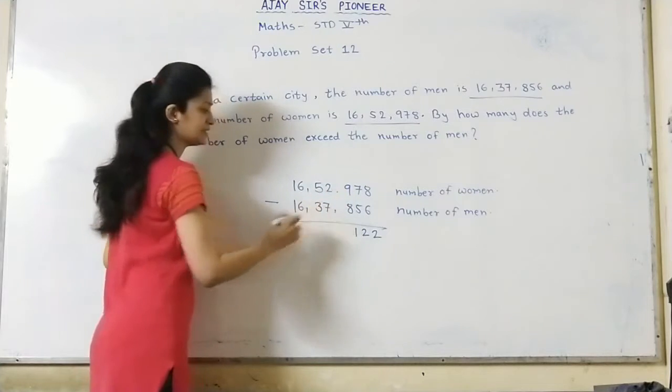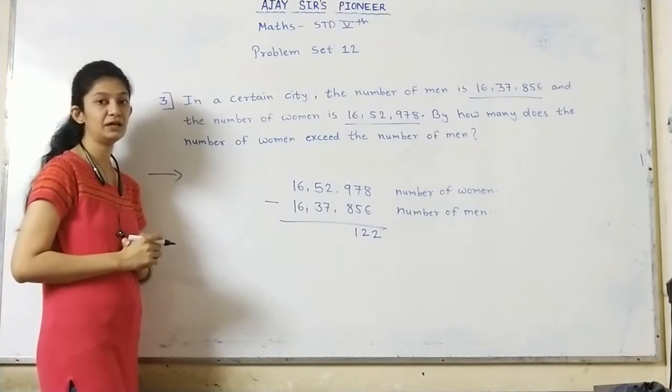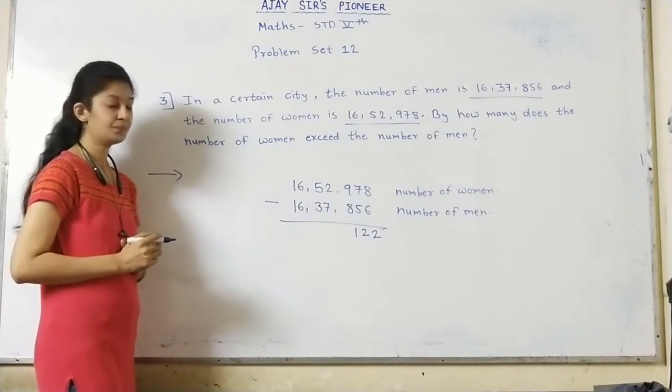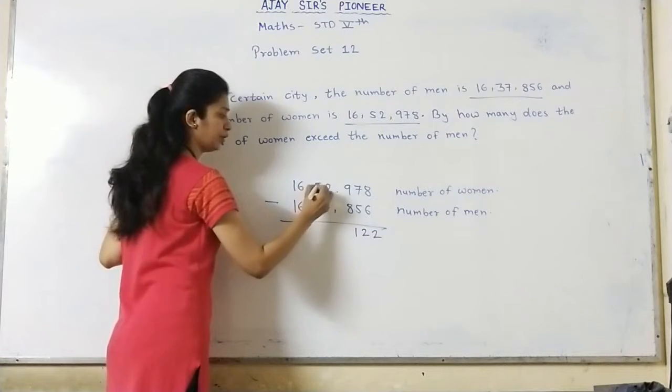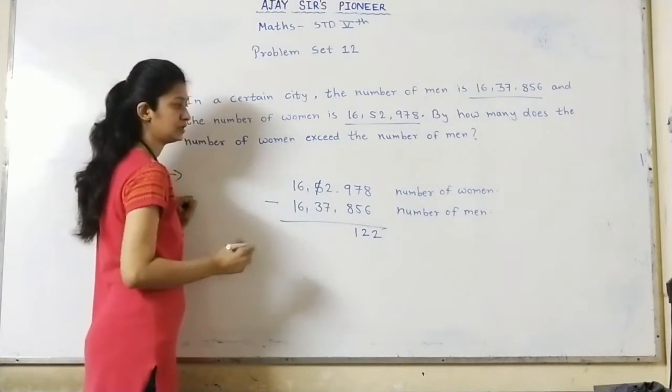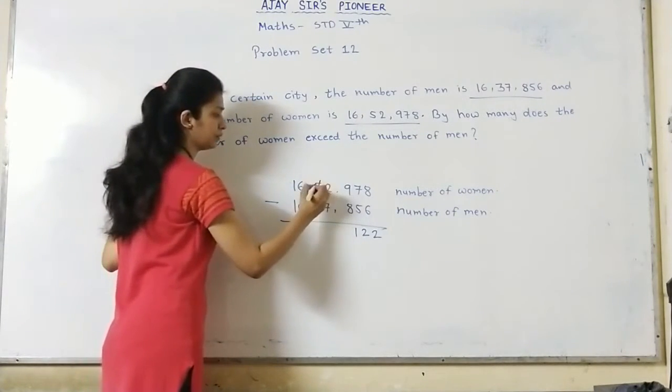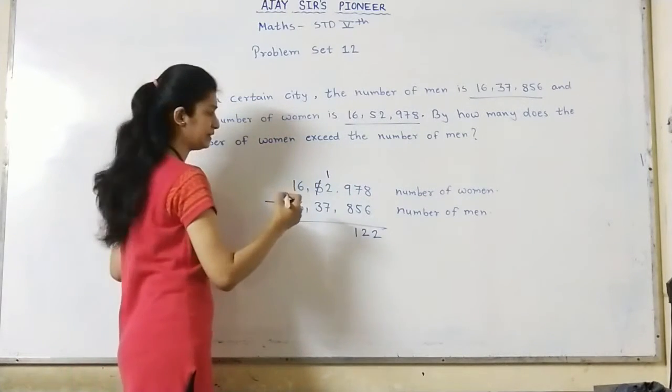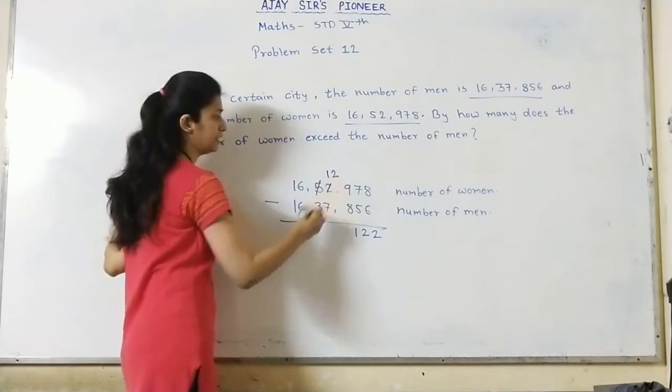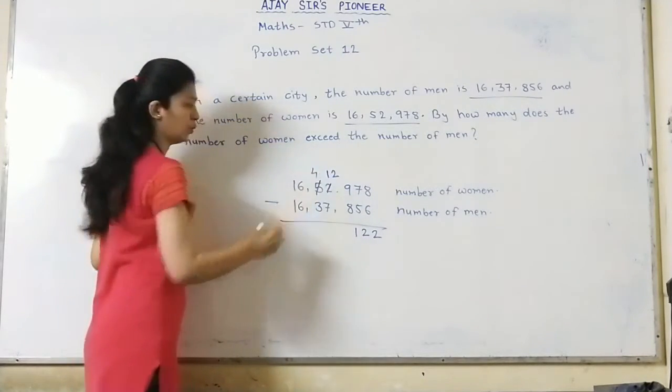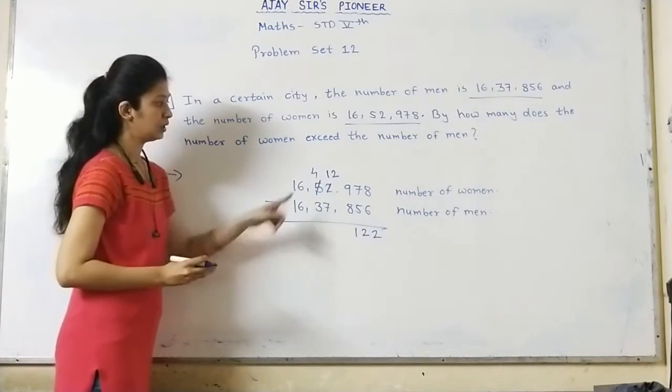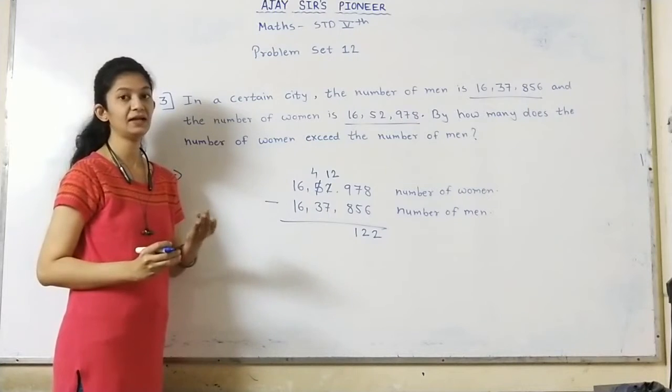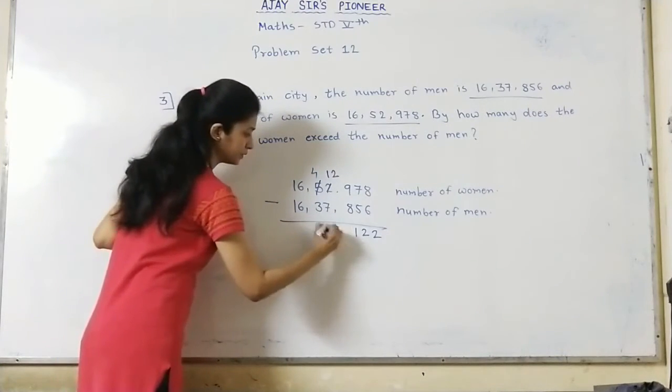Now, 2 minus 7. It can't be possible because 7 is bigger than 2. So we need to borrow from the ten thousand's place. We borrow 1, so it becomes 12, and 5 minus 1 equals 4. Now 12 minus 7. We need to count after 7 till 12: 8, 9, 10, 11, 12. So it becomes 5.